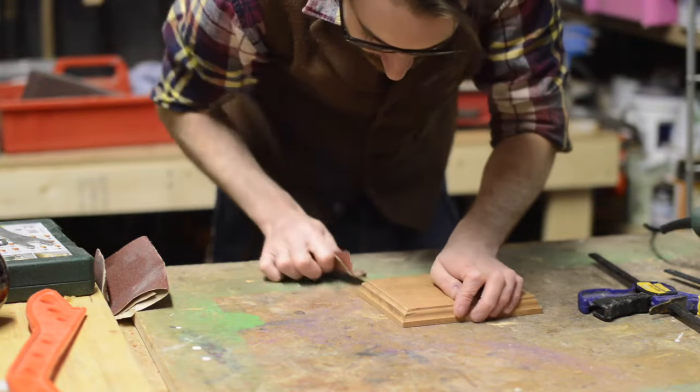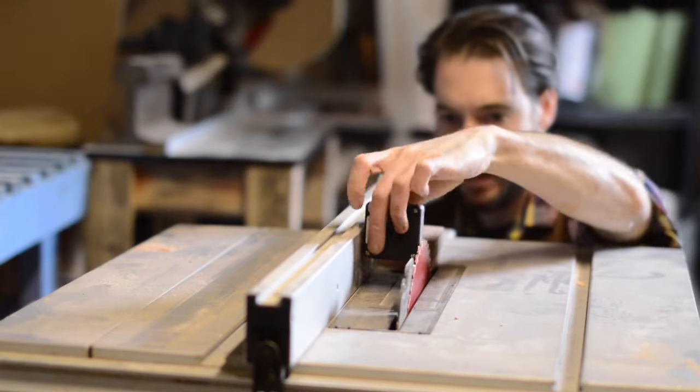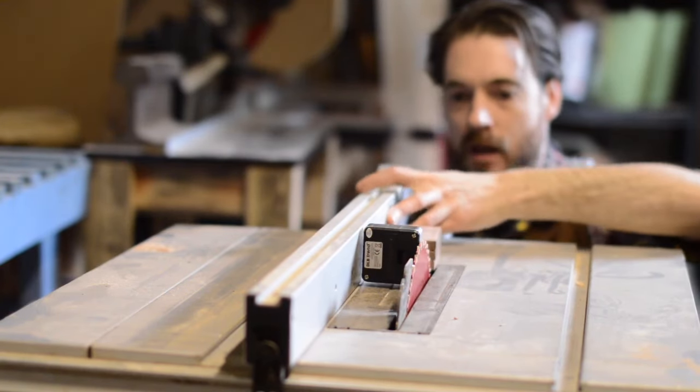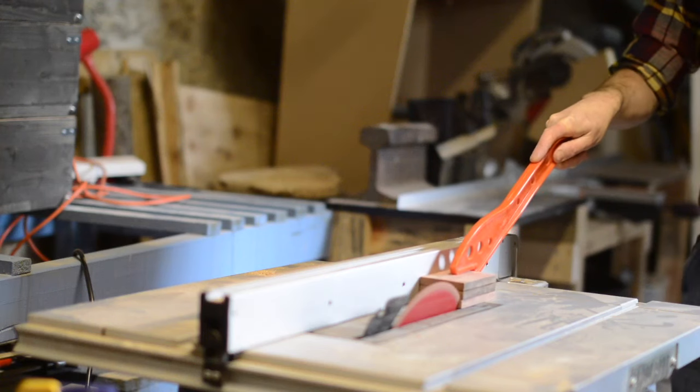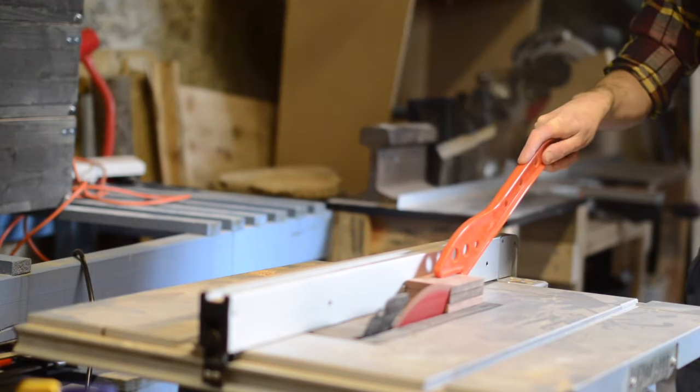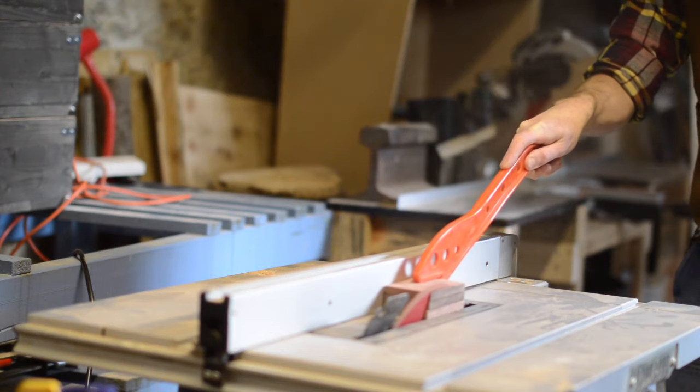I didn't want the stand and the phone to sit on the base at a 90 degree angle, so I adjusted the blade on the saw and cut a slight angle on the bottom of the dock. While I was here I trimmed up all the sides just to clean the wood up a bit.